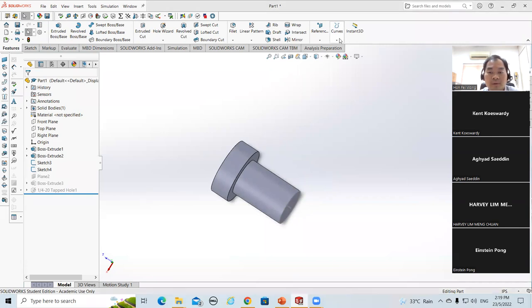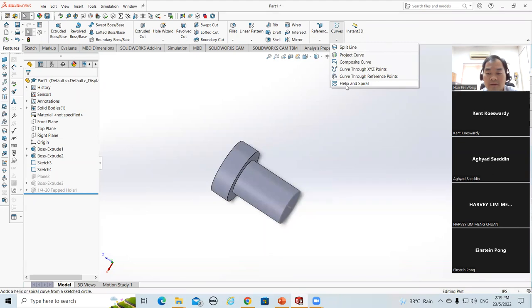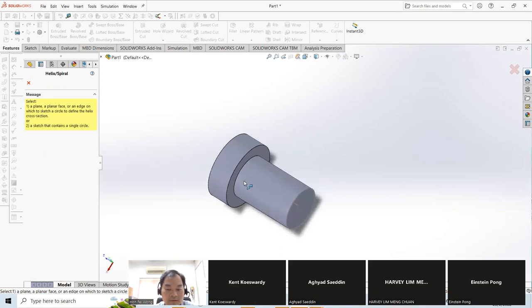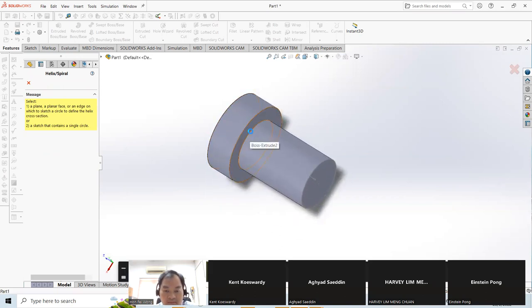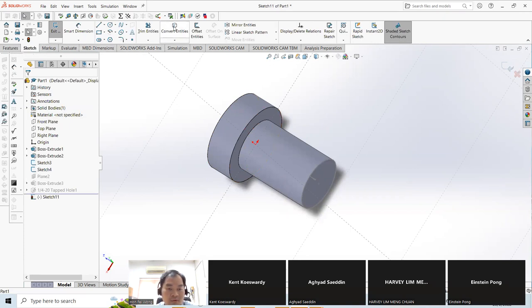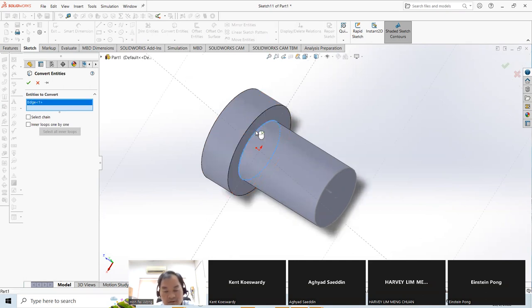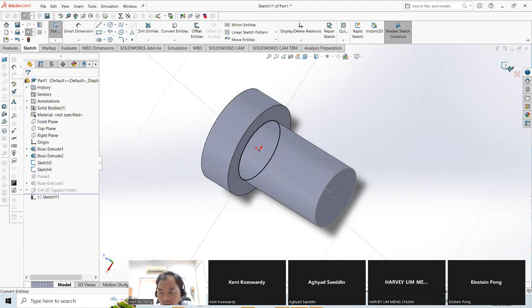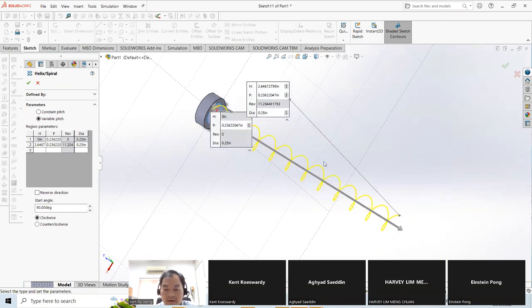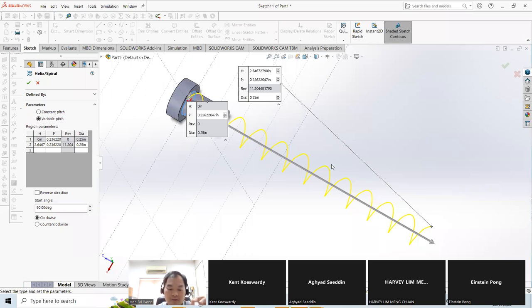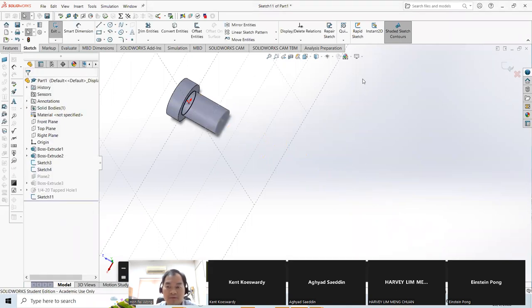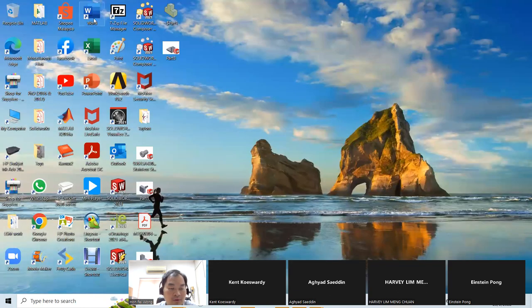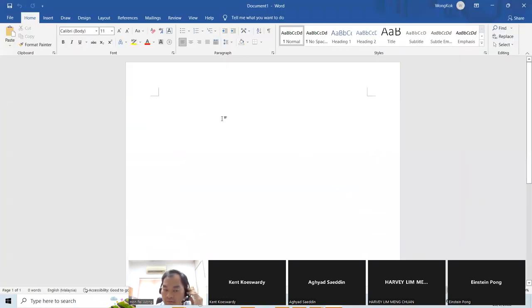This is my screw without thread. So you need to go to Curve, Helix and Spiral. Then select this edge or this cylinder. Go to sketch, go to Convert Entities, because I need to get this sketch, the circle. Then okay. You see the spiral, right? Can you see the spiral?